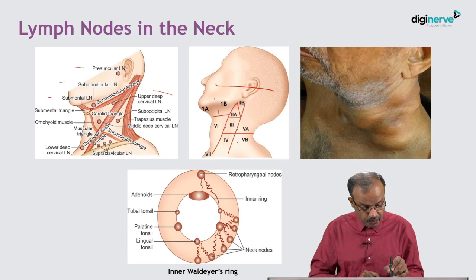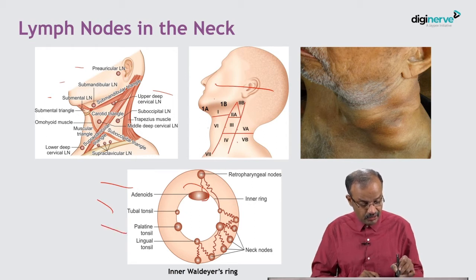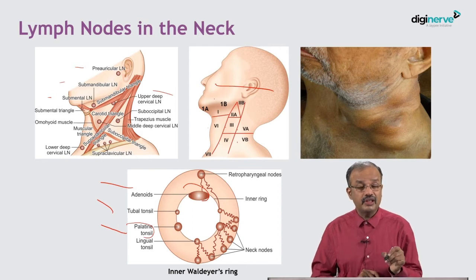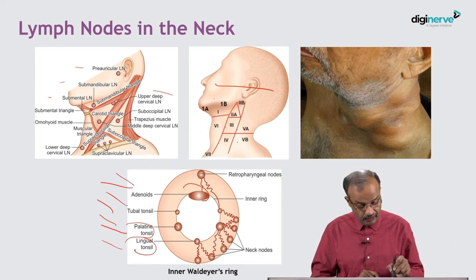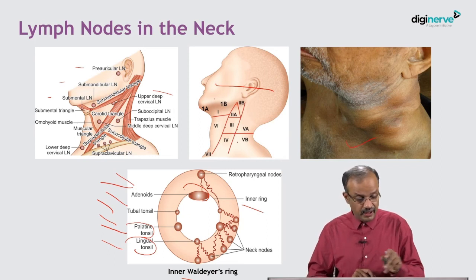The inner Waldeyer's ring is not visible externally, but it is very important, especially in lymphoma and many other conditions. Posteriorly in the midline you have the adenoids, laterally the tubal tonsil, further forward laterally the palatine tonsil — which is traditionally what we call 'the tonsil' — and in the midline at the posterior tongue, the lingual tonsil. So, from back to front: adenoid, tubal tonsil, palatine tonsil, lingual tonsil. This communicates with neck nodes including retropharyngeal nodes. This is the inner Waldeyer's ring.